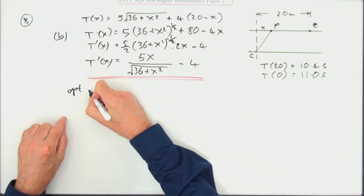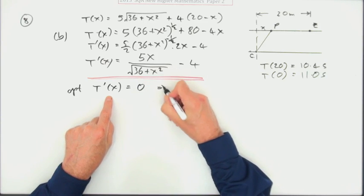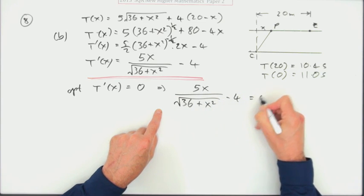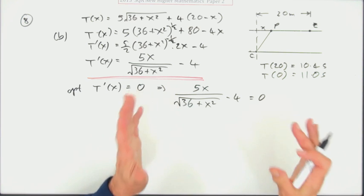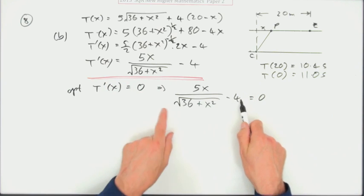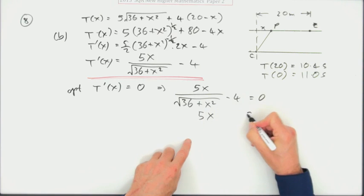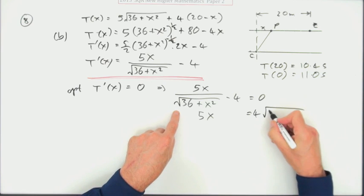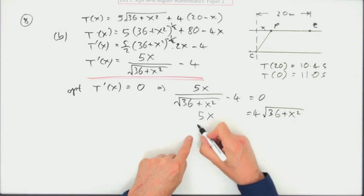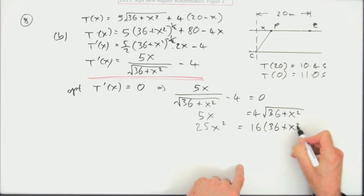Is there an optimum value? Is this ever equal to 0? So 5x over root 36 plus x squared minus 4 equals 0. If you've got a square root, you're going to get rid of that. Take the 4 over and multiply by root 36 plus x squared. Now you can square both sides to get rid of this square root. Squaring this side, 25x squared. Squaring this side, 16 times 36 plus x squared.